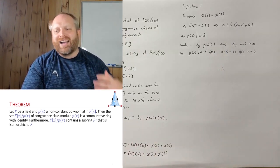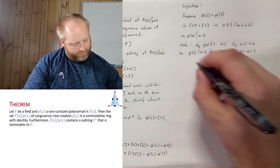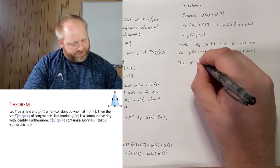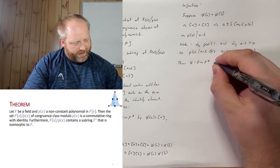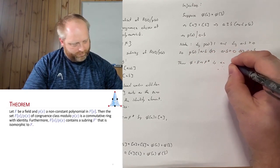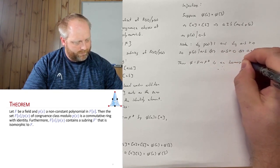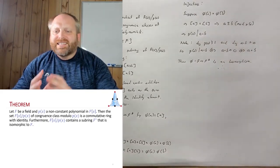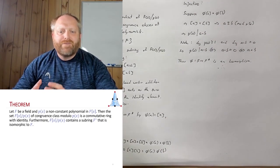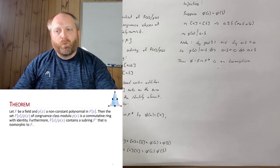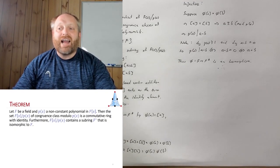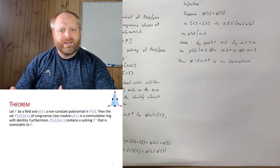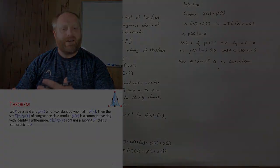So we have injectivity, surjectivity, and a homomorphism — it's an isomorphism. Thus φ mapping f to f* is an isomorphism. This theorem shows that f adjoint x mod p contains a sub-ring that is an isomorphic copy of f — not exactly f, but isomorphic to f.